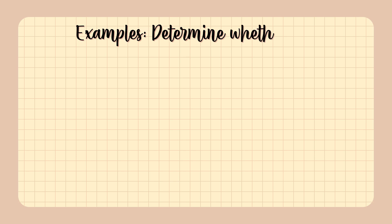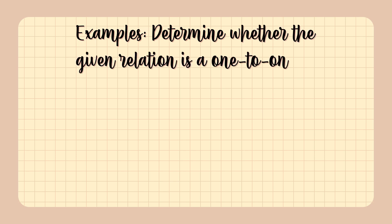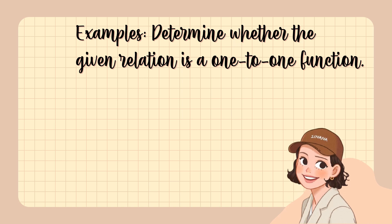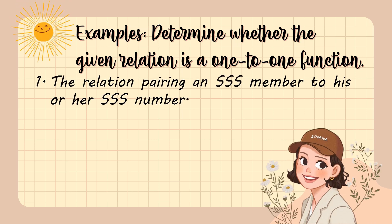Let's have some examples. Determine whether the given relation is a one-to-one function. Number one: the relation pairing an SSS member to his or her SSS number. Each SSS member has a unique number — no two members share the same SSS number — so this is an example of a one-to-one function.